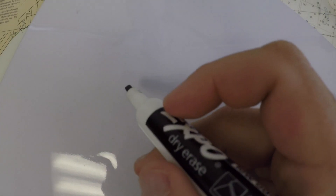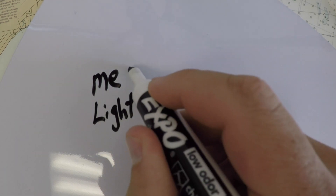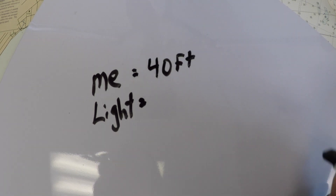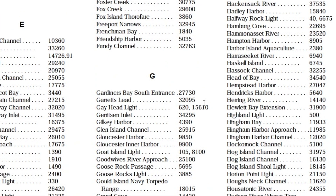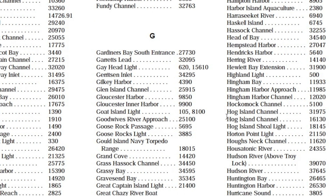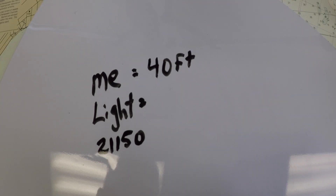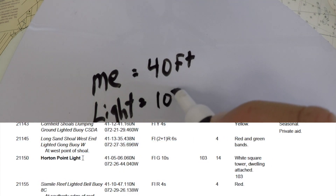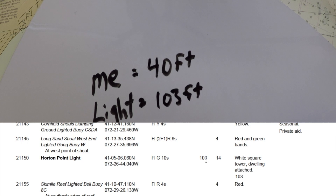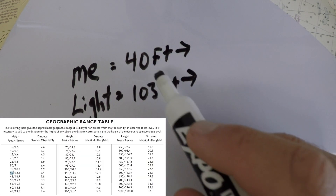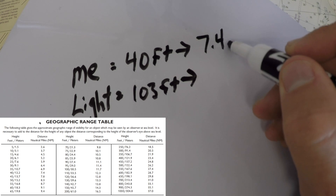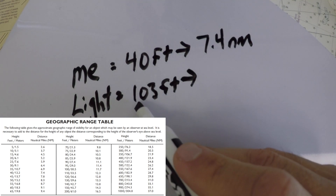To solve the problem, set yourself up with your information and the light — Horton Point Light. The problem says you are 40 feet above sea level, and you need to find how far above sea level the light is. Look up the light list number in the back of the light list, which turns out to be light list number 21150. Looking in the light list, the light is 103 feet tall. Our next step is to go to the geographic range table. For 40 feet, we pull out a value of 7.4 nautical miles.